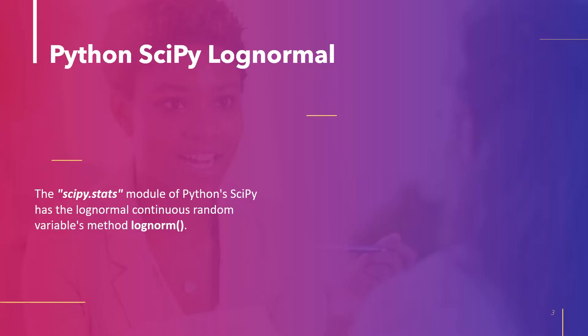So what is a log normal distribution? A log normal distribution is one where the logarithm of values is statistically normally distributed. Using related logarithmic calculation, a log normal distribution can be converted into a normal distribution and vice versa. Python SciPy has a method log norm in the module scipy.stats, which is a continuous random variable that is log normal.